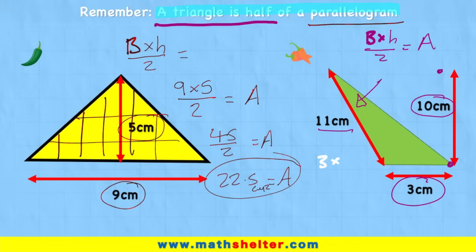Base is 3 times the height of 10 over 2 equals my area. 3 times 10 is 30 over 2 equals area. And 30 divided by 2 is 15 equals area. So the answer is 15 centimeters squared.